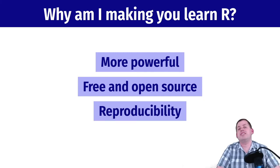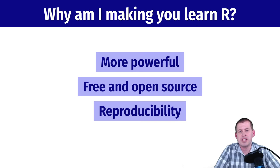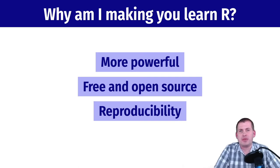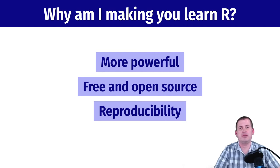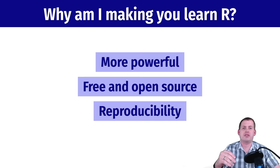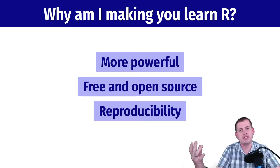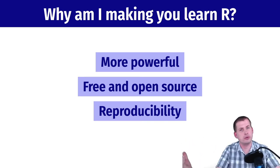The third reason is for scientific reasons, and this gets at the heart of science. When you learned about science back in third grade, the basic process is: you have a hypothesis, you run an experiment, and then you try to reproduce that experiment. Other people can do the same experiment and get the same results, and as long as that happens, you have reproducible science and can guarantee that things are true.